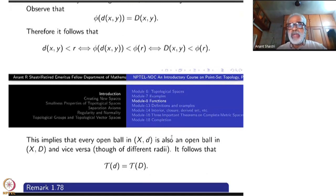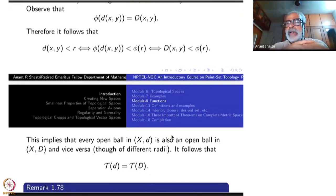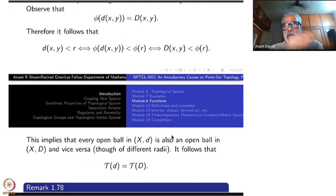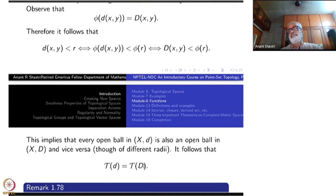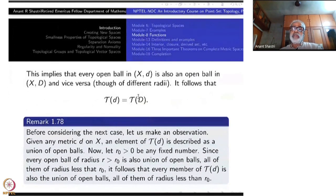Now look at D'. For D', you need a different argument altogether. Before considering that, let me make one point very clear about the topology τ_d itself. Given any metric d on X, an element of τ_d is described as a union of open balls in the metric d. Now let r₀ be any fixed positive number. Since every open ball of radius bigger than r₀ is also a union of open balls all of radius less than r₀, this is possible.